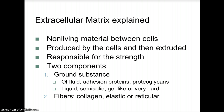The extracellular matrix is the non-living material between cells. It is produced by cells and then extruded outside of the cell, and it is responsible for strength. Two components of the matrix include the ground substance — which consists of fluid or adhesion proteins and proteoglycans, and can be liquid, semi-solid, gel-like, or very hard — and fibers, which can be collagen fibers, elastic fibers, or reticular fibers.